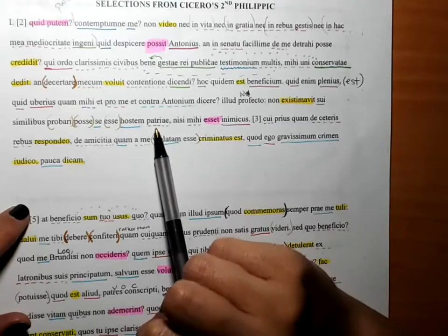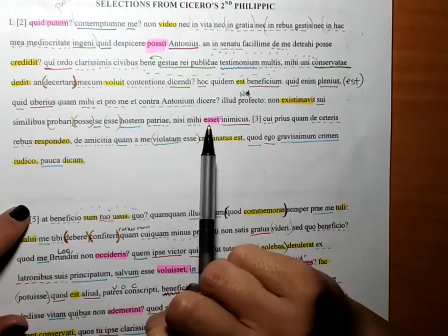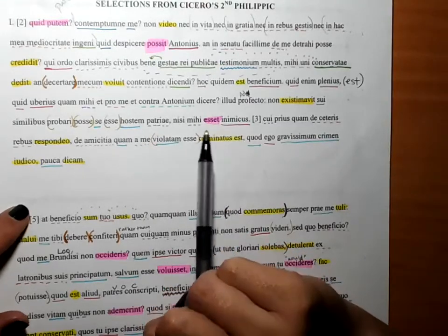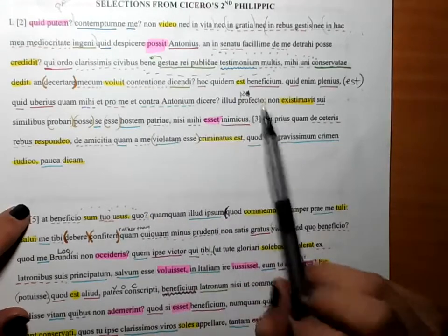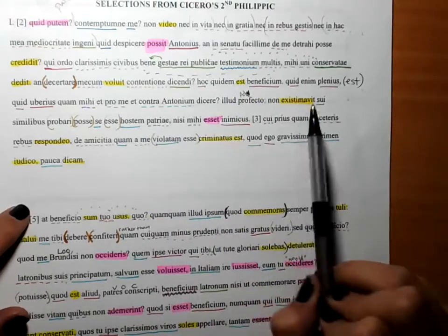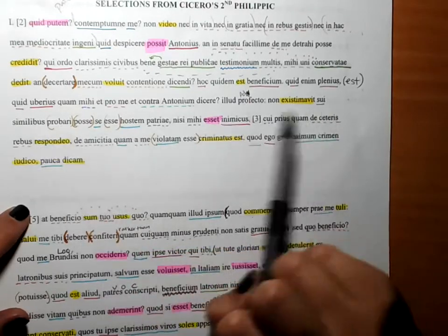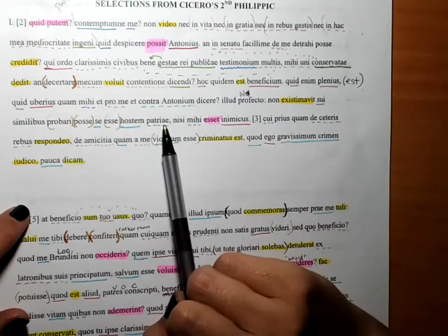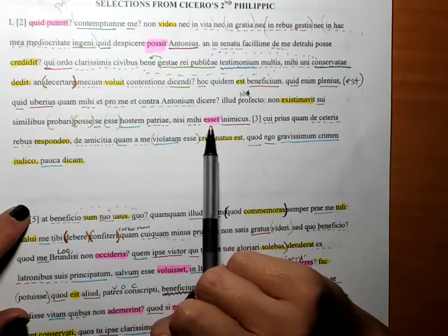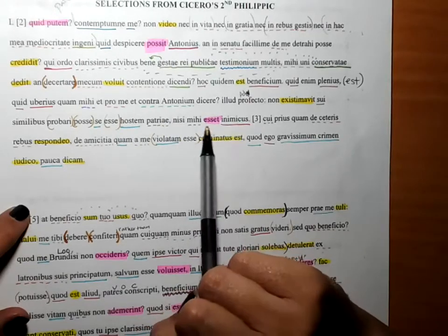Let's try that one more time. He didn't judge that he would be able to be proven to men similar to himself to be an enemy to the fatherland unless he were an enemy or unfriendly to me.